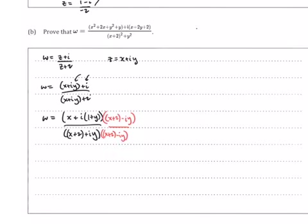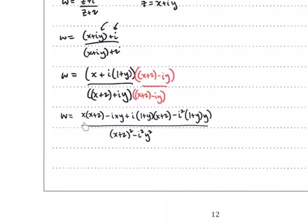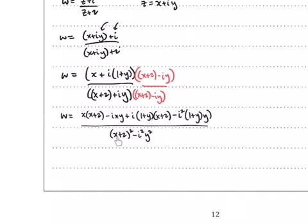This nuance is very important — you go in the wrong direction if you miss it. I'll do some algebra off screen — you can try it on your own, then pause and come back to check. Expanding the numerator: x times (x + 2), x times (negative iy), then i(1 + y) times (x + 2), and i(1 + y) times (negative iy) which gives a negative i² term. The denominator, using the complex conjugate product, gives (x + 2)² and then negative i²y², which simplifies nicely.